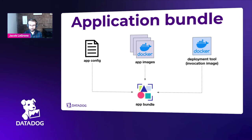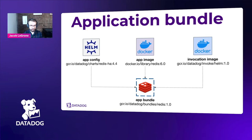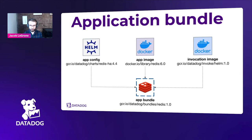Here's a real example: we're building an application bundle that installs Redis on a Kubernetes cluster. We take in a Helm chart and a Redis Docker image, plus a Helm-based invocation image that knows how to apply Helm charts to Kubernetes clusters. Each component is versioned and content-addressable, and we get out an immutable artifact — the bundle — at the end of that process.